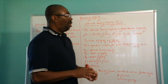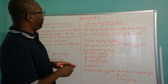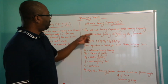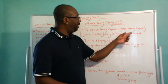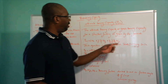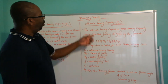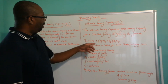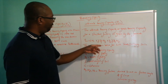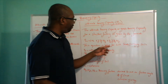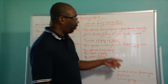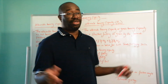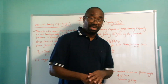As it relates to ultimate bearing capacity — q-u — the ultimate or gross bearing capacity for a shallow footing is given by the Terzaghi formula: q-u = c·Nc + γ·Df·Nq + ½·γ·Bf·Nγ. This formula is valid for both sandy and clay soil.